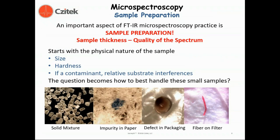Microspectroscopy sample preparation is one of the most important aspects of microspectroscopy practice. The quality of the spectrum you get from an FTIR microspectroscopy system is very much dependent on the preparation of the sample. One of the more important issues in sample preparation is sample thickness — it is a common issue that samples can be optically thick, bands can be totally absorbing, and therefore your ability to determine chemical composition is limited. We want to ensure that samples are presented at an appropriate thickness.